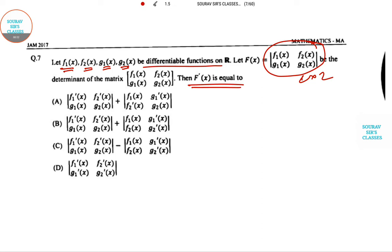They have asked the differentiated value of the given matrix. There is a special rule we will be following. So F(x) is this, so F dash x is nothing but the derivative of the first row, the derivative of the second.